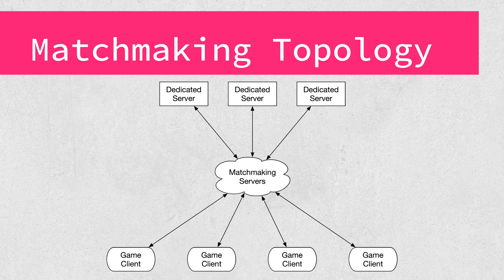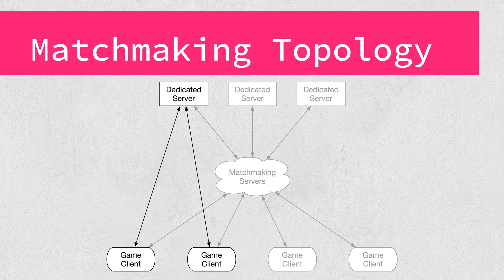Let's talk about what the network topology — the conceptual layout of a network — might look like for a couple of game types. First up, we have matchmaking style games. Think first person shooters, MOBAs, and other games where players are in discrete matches and game lobbies. Here, we have a number of game clients connected to a set of matchmaking servers waiting for a game. On the other side, each dedicated game server is connected to the matchmaking server, so it can know what's available — how many players are connected, what style of gameplay is available, etc. These dedicated servers may be run by the game studio or by groups of players themselves. When a game starts, the client maintains a connection to the matchmaking server but also makes a direct connection to the dedicated server, where actual game traffic — movements, actions, chat messages, etc. — takes place.